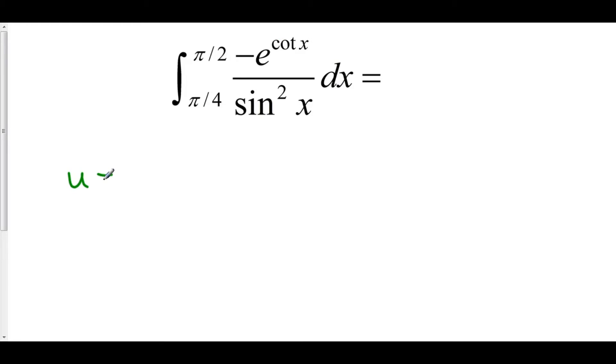Let's just assume that u is equal to cotangent of x. That means that du is equal to negative cosecant squared of x. Well, I could rewrite this entire integral to get rid of the sine squared and replace it with a negative cosecant squared x. Take a look.